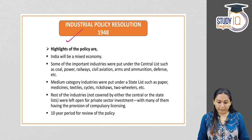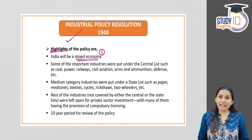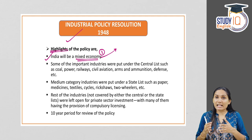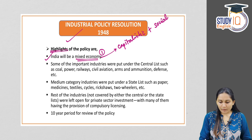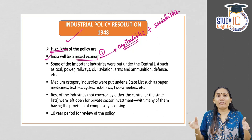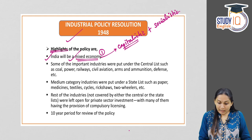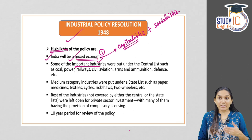Coming to the highlights of the IPR 1948: first, India would be a mixed economy. A mixed economy is one which has adopted characteristics of both capitalistic and socialistic economies. It is not completely capitalistic or completely socialistic — it is a mix of both capitalism and socialism.